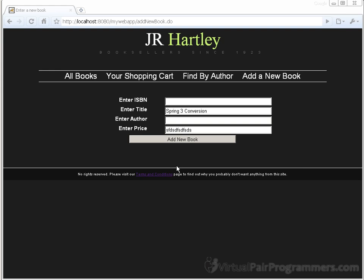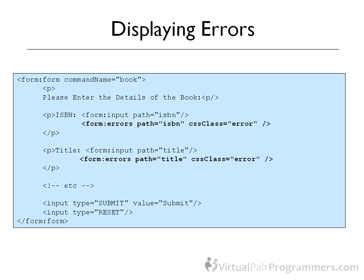This is where the Spring form library comes in useful again. In order to display any errors that have happened during conversion and validation, we need to use the Spring form tag called errors. It takes two parameters. The first parameter is called path, and it means the field that we're validating - so for us this would be ISBN, title, price, and author. The second parameter is the name of a CSS class you want to use to display the output, because almost always you want to emphasize this text with a special styling.